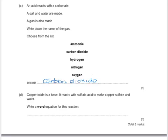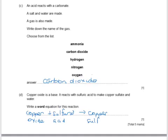Copper oxide is a base. It reacts with sulfuric acid to make copper sulfate and water. Write a word equation for this reaction. We start on the left with copper oxide reacting with sulfuric acid — these are both the reactants — and the products are copper sulfate plus water.